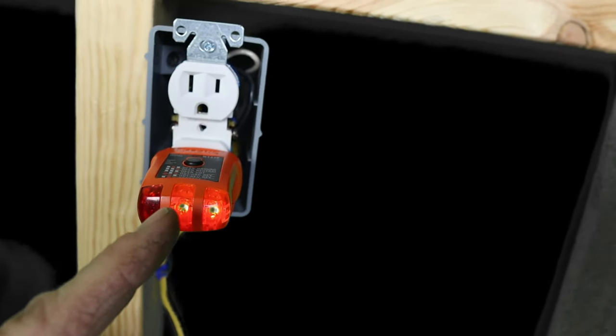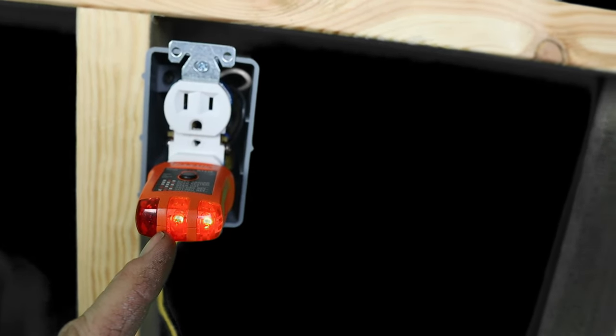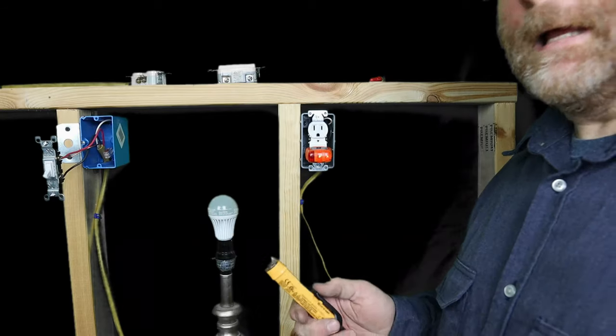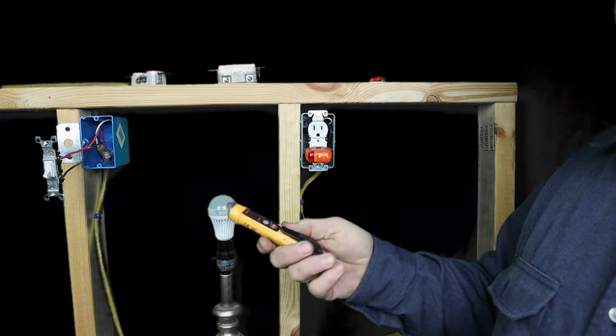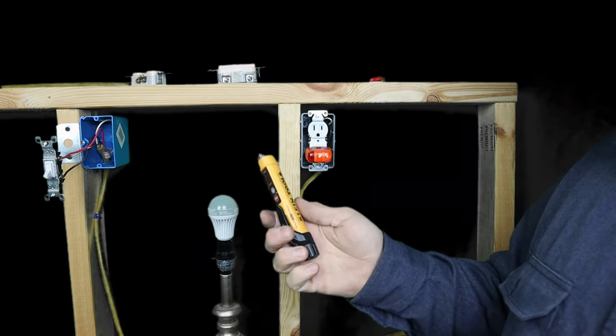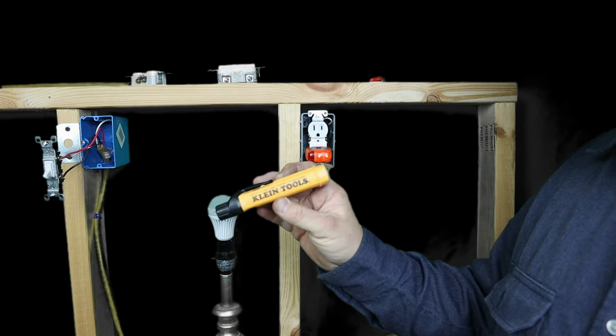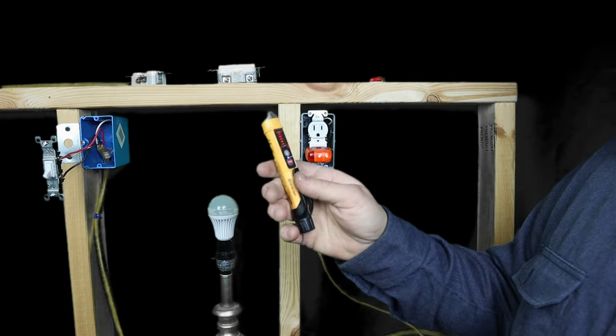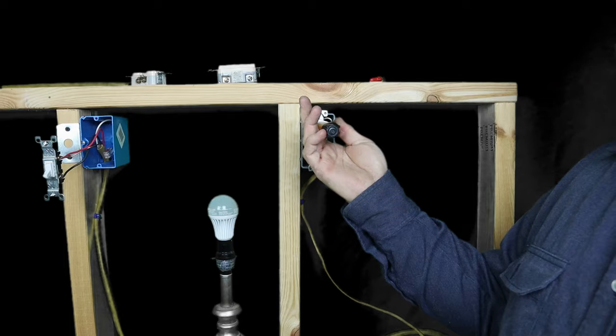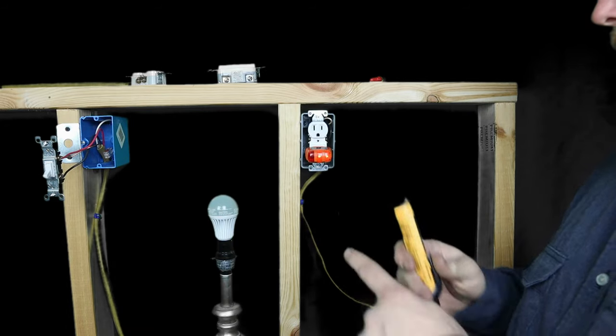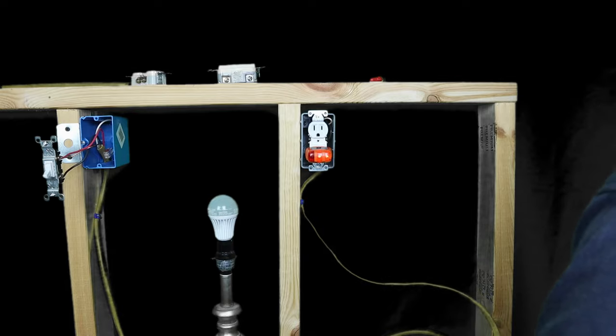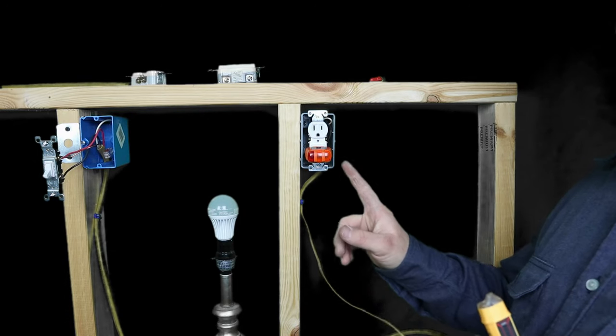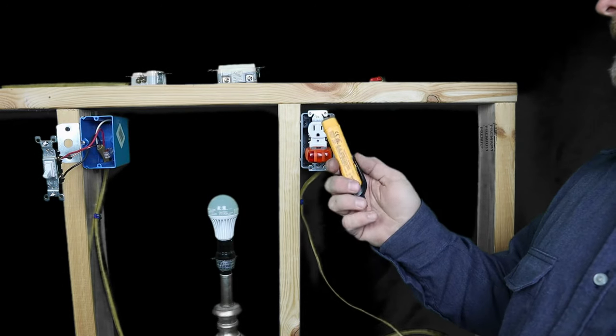First thing we want to do is obviously make sure we cut the power on this and double check. All right, links to everything I'm going to be using are obviously going to be down below. These are some of the things that I recommend. This is the Klein circuit tester and this is a Klein non-contact voltage tester. We call them tick tracers. All right, so we're going to turn it on. We're going to make sure it's hot and it is. Plus we can see right here. Let's turn the power off.